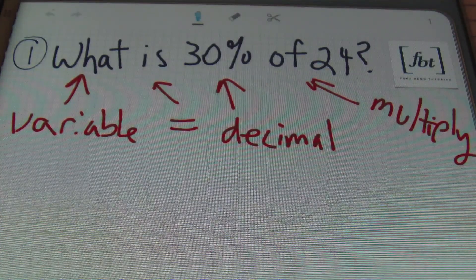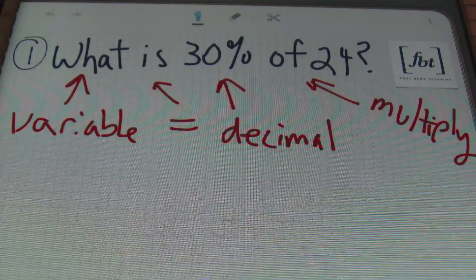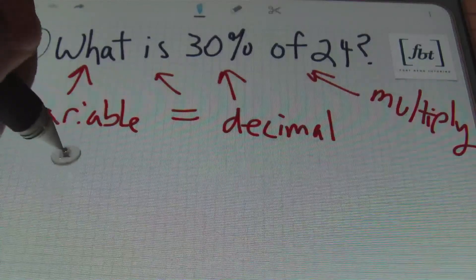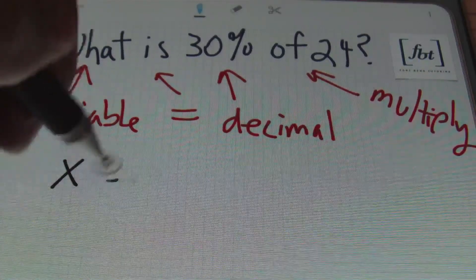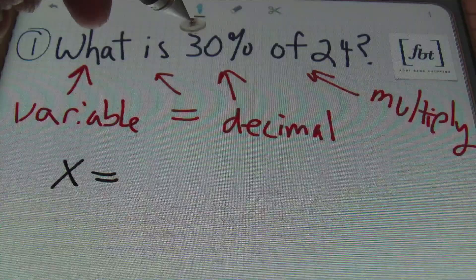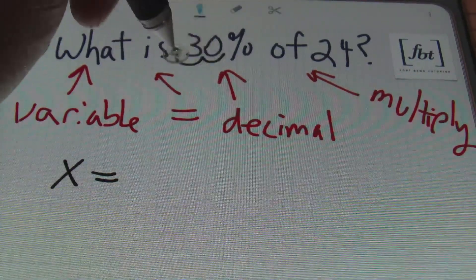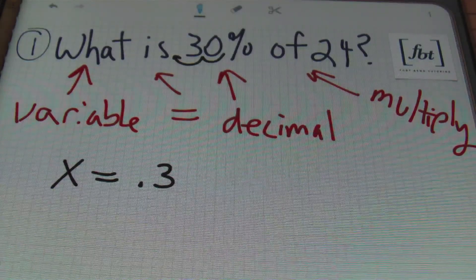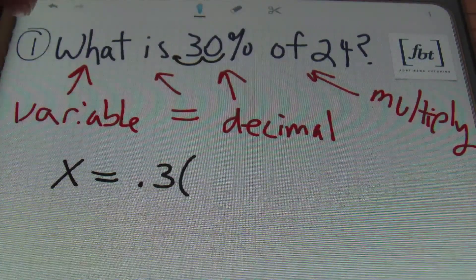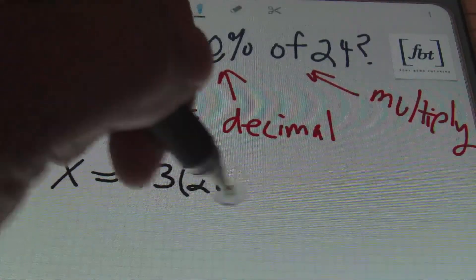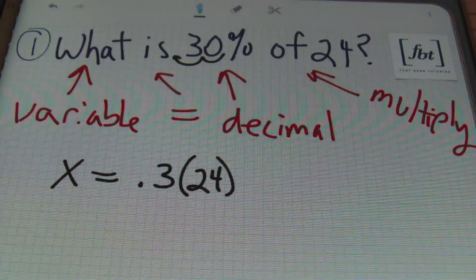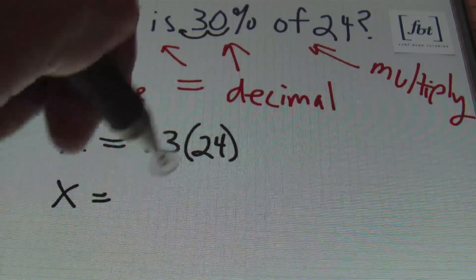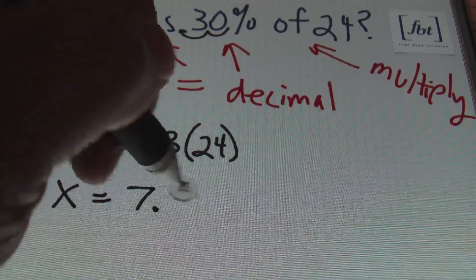You need to change your percent into decimal notation. The word 'of' means to multiply. So for our variable, let's use x. In translating this, the word 'what' is our variable x. The word 'is' is the equal sign. We'll convert our percent into a decimal by moving the decimal two places to the left to write this as 0.3. The word 'of' means to multiply.